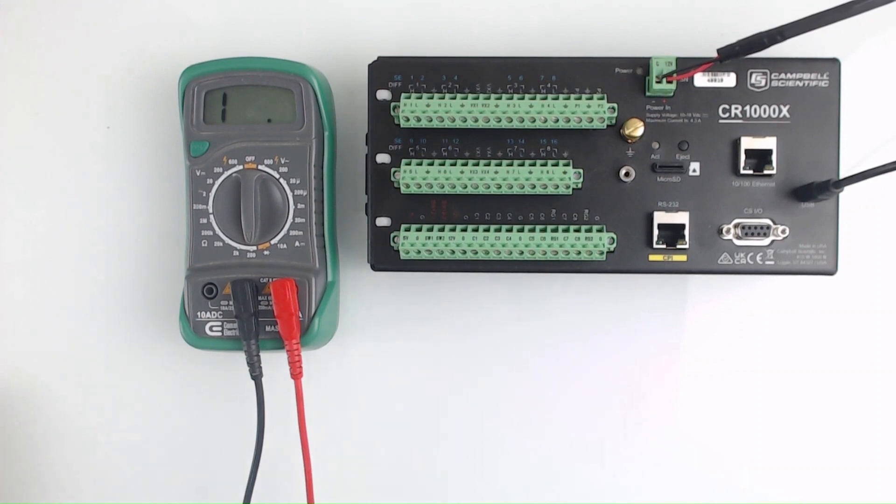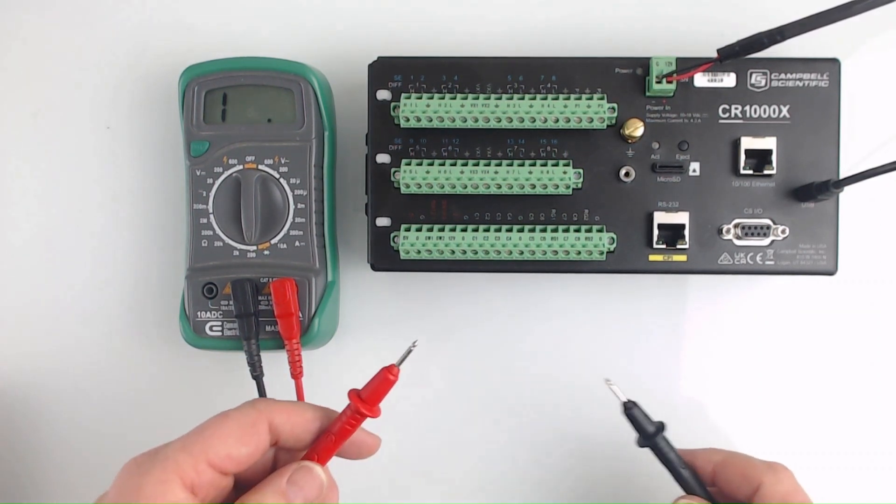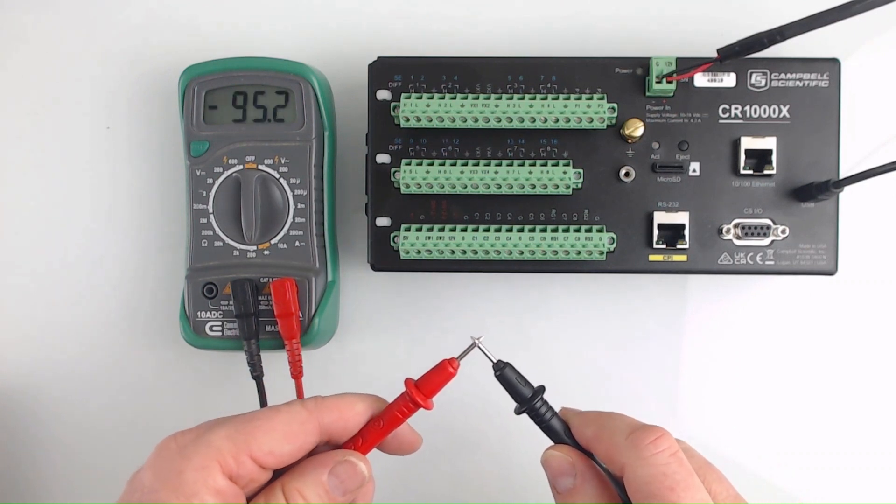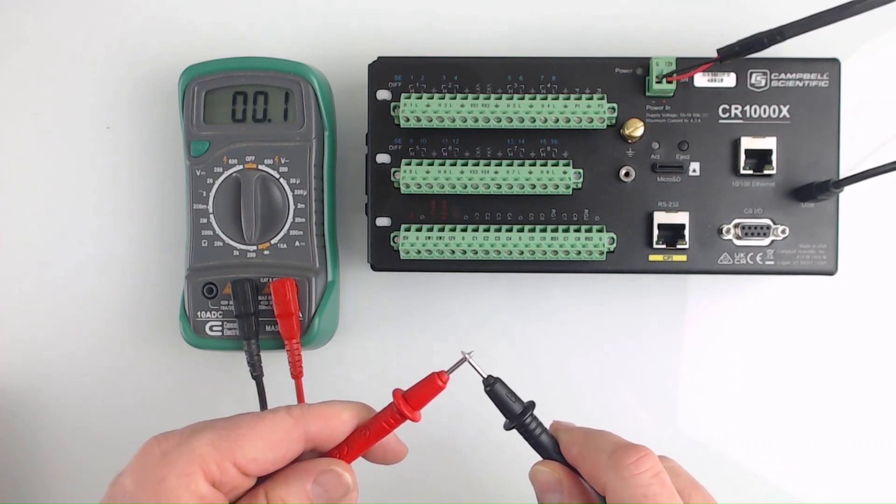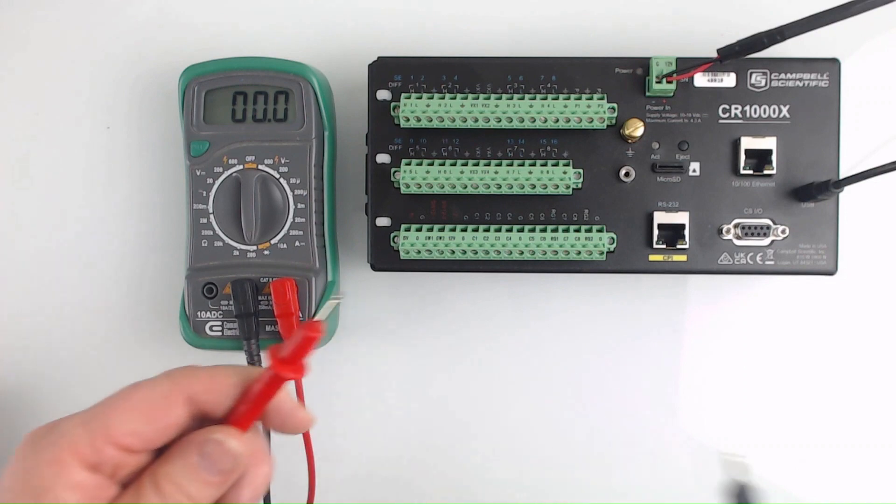When continuity or a closed circuit is not detected you will see a visual indicator similar to this. It means the reading is infinite or out of range. When I touch the probes together to complete the circuit a very low resistance measurement is displayed. If the multimeter had an audible beep for a continuous circuit I would hear that now.